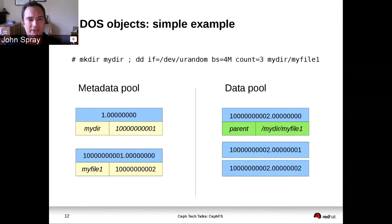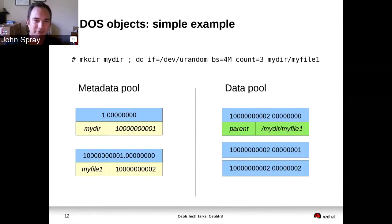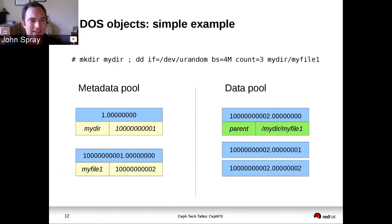These are OMAP key values, which contain the inode for 'mydir'. For that 'mydir' inode, there is a directory fragment object which contains an OMAP key for 'myfile1', which contains an inode. In the data pool, you've got the objects for the file — there are three because the default chunk size is four megabytes and we wrote 12 megabytes.